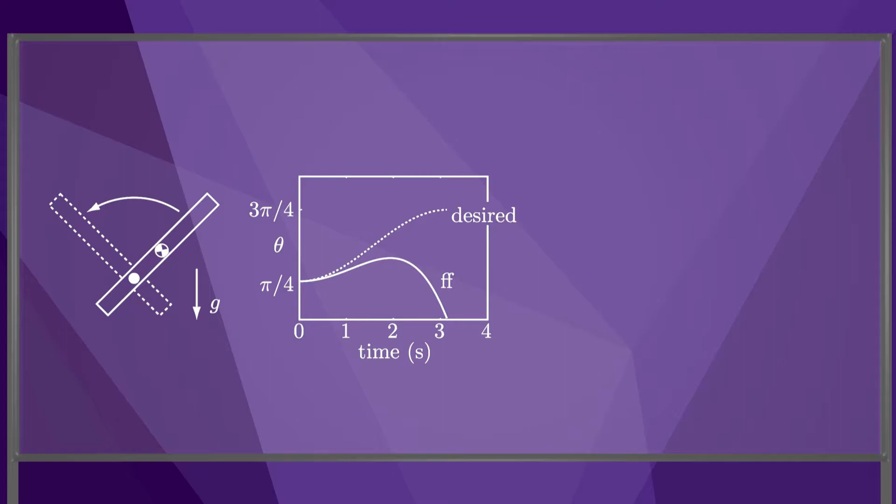The robot starts out approximately on the trajectory, but over time the actual trajectory diverges from the desired due to error in the model.